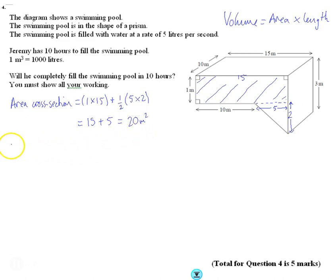So if I want to work out the volume, I'm going to take that area, 20, and I'm going to times it by the length. It's 10 back here, it's 10 from front to back, so times that by 10. So the volume is 200 meters cubed.